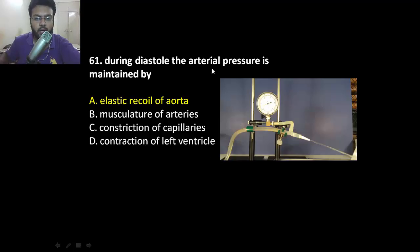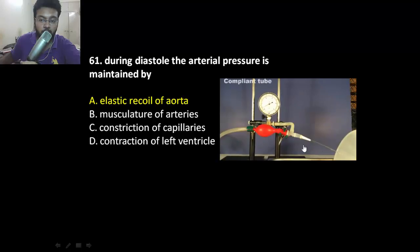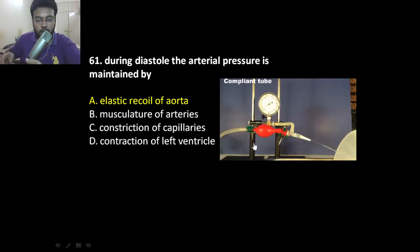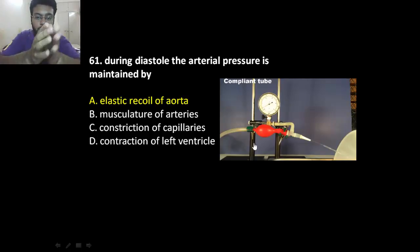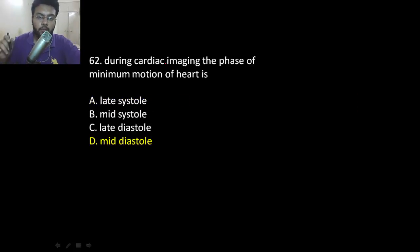During diastole, arterial pressure is maintained by the elastic nature of the arteries. Watch this clip: a rigid tube shows peak pressure during systole and null pressure during diastole. An elastic artery maintains uniform pressure. When there is systole, the aorta dilates; during diastole it does not collapse completely like a rigid tube — it collapses slowly, maintaining diastolic pressure.